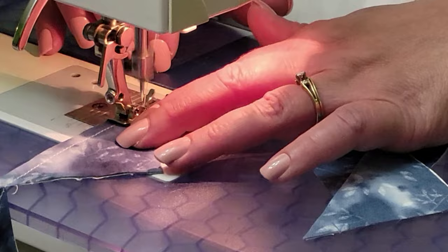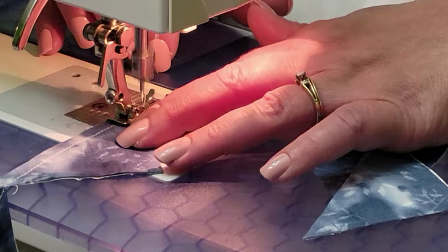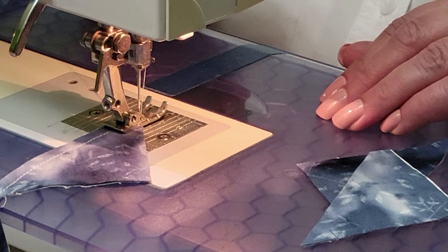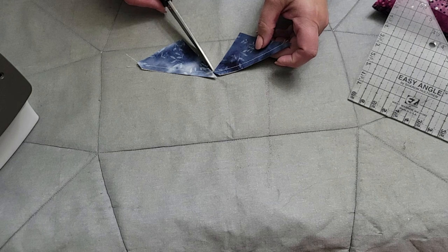Once again, I ended up right at that edge that I need to be at. We continue doing that with as many easy angles as you need to, and then you're ready for the ironing board. Now that I have my chain of easy angles, I'm going to get them cut apart, so trim that edge down and cut between them carefully, and they're ready for the iron.